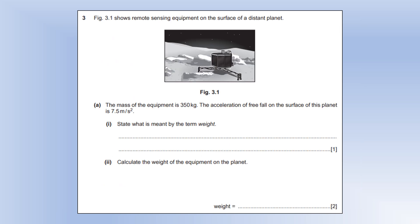Moving on to question three. We've got remote sensing equipment on the surface of a distant planet. The mass is 350 kg. The acceleration is 7.5 metres per second squared. State what is meant by the term weight. Well, it's the force of gravity between two masses. You can't get weight without having two masses and their gravitational fields interact. Calculate the weight of the equipment on the planet. Weight is mass times gravitational field strength. So we use g equals 7.5 because we're on a different planet.